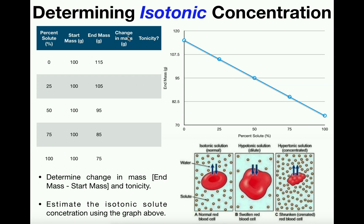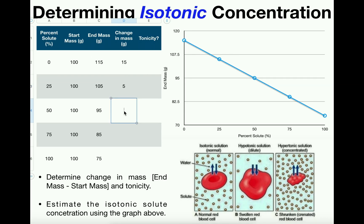What is our change in mass in the zero percent sugar solution? We take the end mass minus the start mass, so 115 minus 100 is 15 grams. For the second one, 105 minus 100 is just 5.